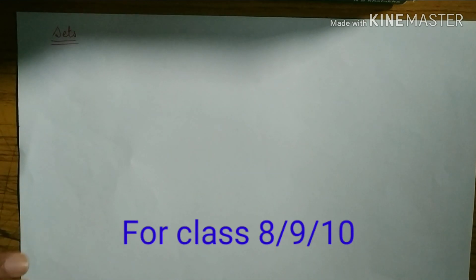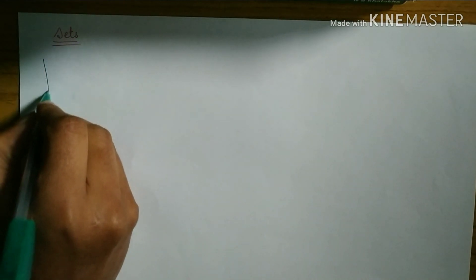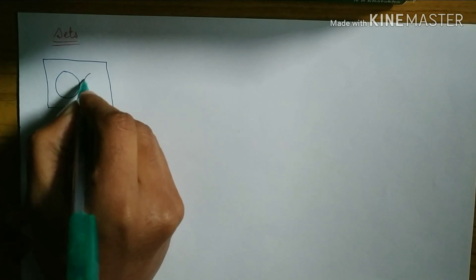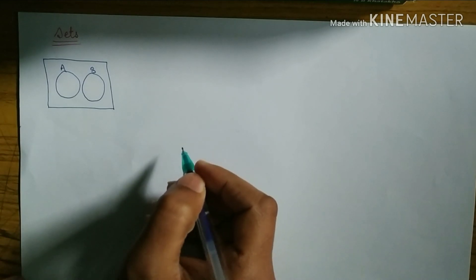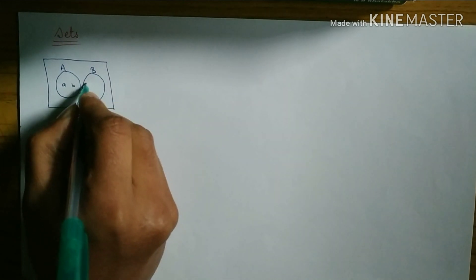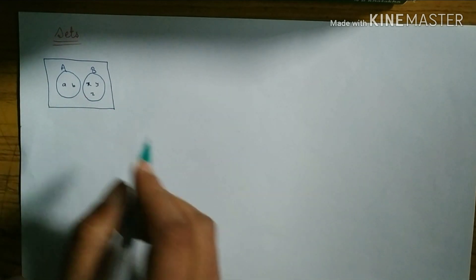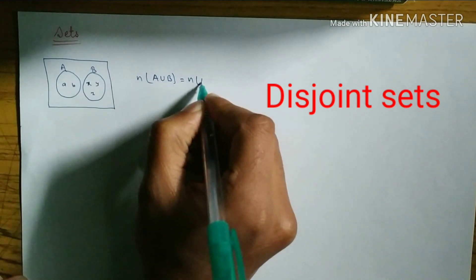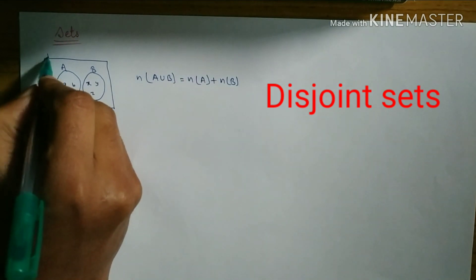Let's start. When two sets A and B are disjoint, I'm going to provide you a diagram so it's easy for you to understand. When two sets are disjoint — not overlapping — suppose the elements are a and b in set A, and x, y, z are three elements of set B. In this case, the formula of n(A∪B) is equal to n(A) plus n(B) when two sets are disjoint.